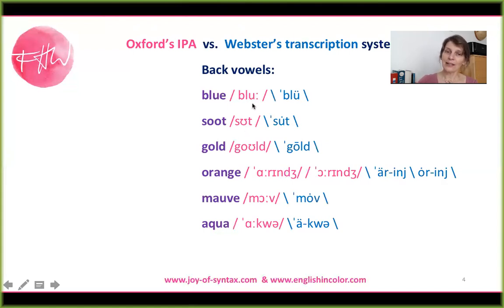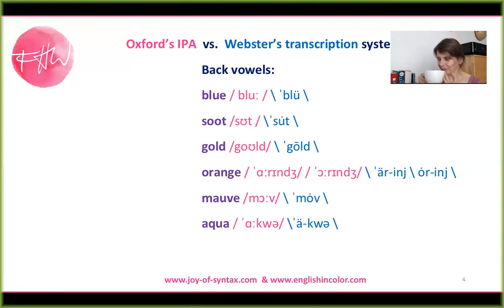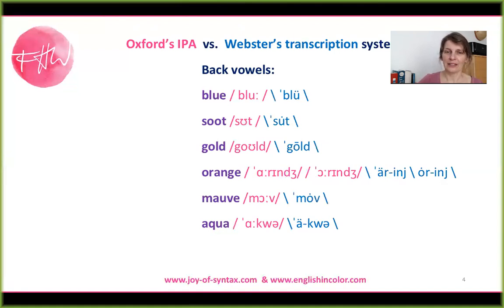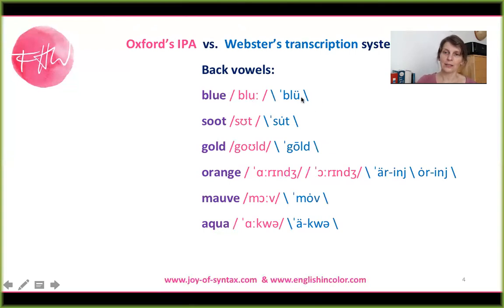So I actually think it's better to use a different symbol. I'm becoming a little bit hoarse — let me take a drink of water. So blue, soot: the IPA suggests a difference in kind, while the Webster transcription system suggests a difference in length only. Interesting.